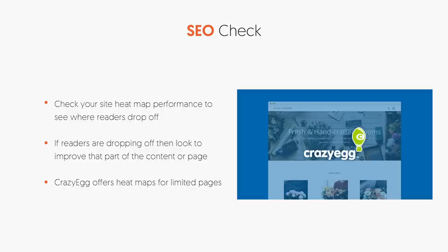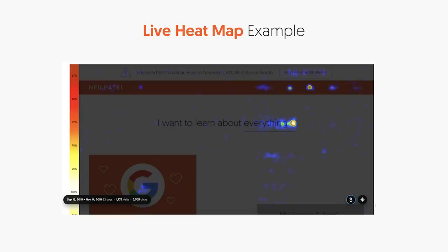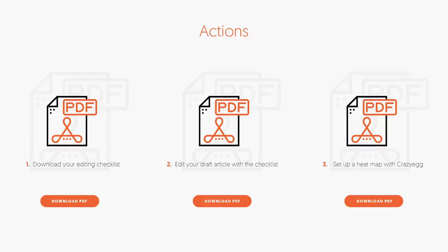Another aspect of SEO that most people don't talk about is user experience. Are people actually reading your content? Where are readers dropping off, and how can you improve that experience? Through Crazy Egg, you can create a heat map that shows you how people are interacting with your webpage — it shows what people are reading and what they're not, and which pages need to be improved. So go to neilpatel.com/training or beneath this video to download your editing checklist, edit your draft article with the checklist, and set up a heat map with Crazy Egg to see how people are engaging with your content so you can continually improve it.